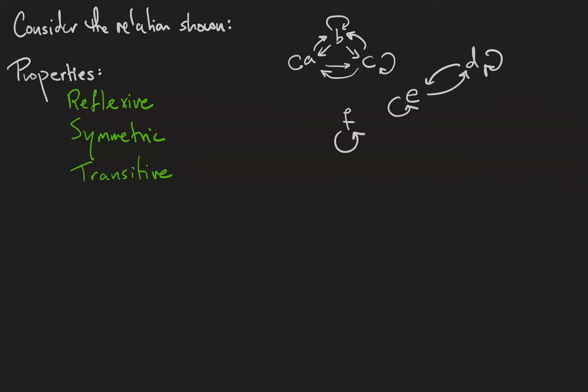You can check that for yourself, but consider the walk between A and C through B. That means we also have the arrow from A to C.